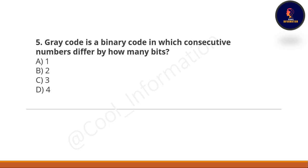Next question: Gray code is a binary code in which consecutive numbers differ by how many bits? Option A: 1. Option B: 2. Option C: 3. Option D: 4. And the correct option is option number A, which is 1.